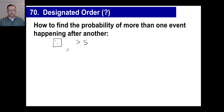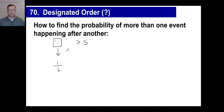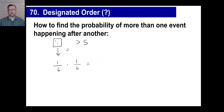For example: what are the odds of rolling a two on a die, and then rolling a number greater than five? The odds of rolling a two are one out of six. The odds of rolling a number greater than five — that's just a six — are one out of six. Multiply those together: one out of 36.